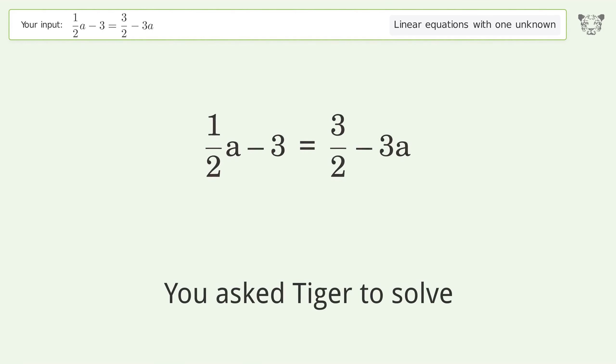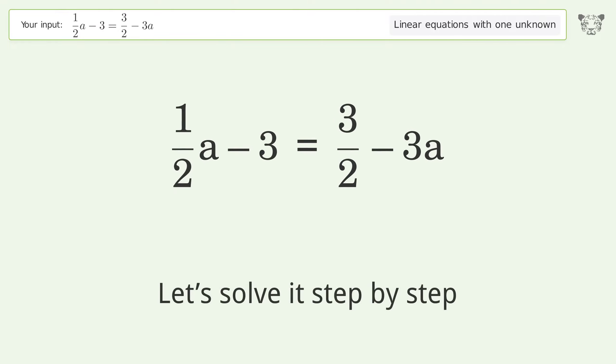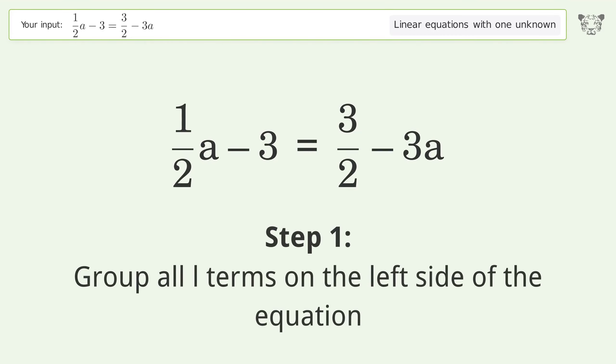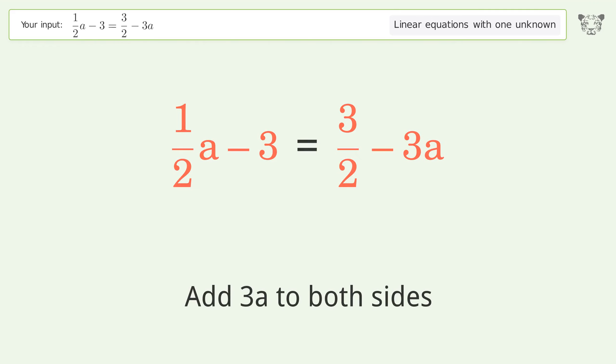You asked to solve this problem dealing with linear equations with one unknown. The final result is a equals nine over seven. Let's solve it step by step. Group all a terms on the left side of the equation. Add three a to both sides.